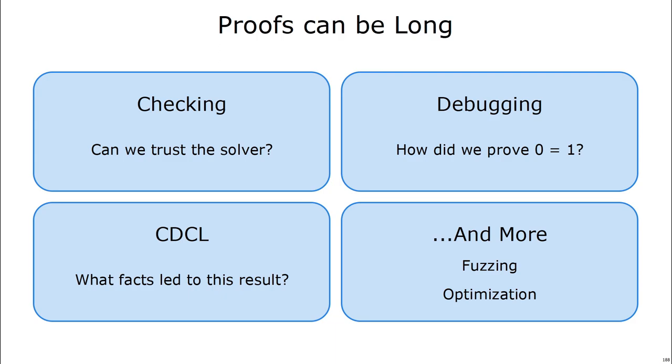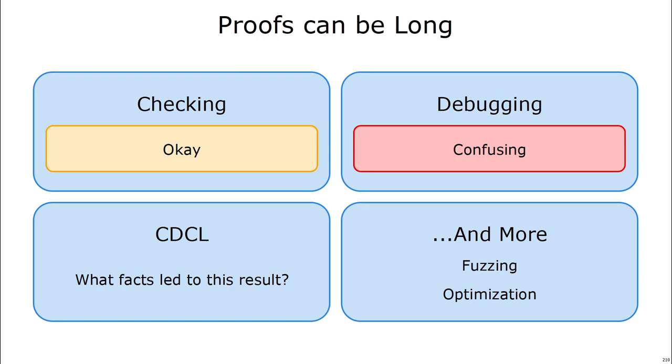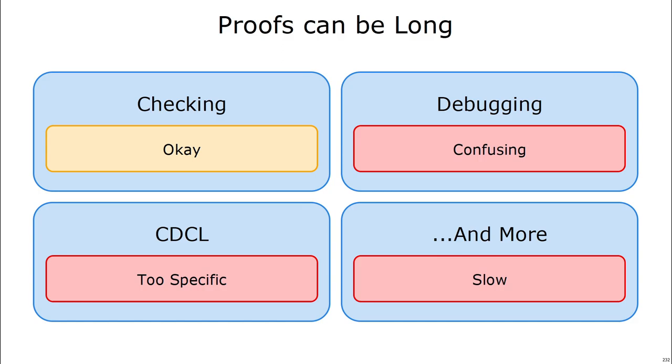However, as soon as you start using proofs, you'll run into the problem that proofs can be long. In checking, this is not such a big problem because our proof checker is fast. But in debugging, long proofs are too confusing to be used effectively. In CDCL, proofs are too long and too specific to be able to be backtracked on effectively. And in other applications, proofs slow down the entire pipeline because you may be doing some hard computation on them.